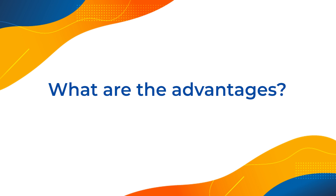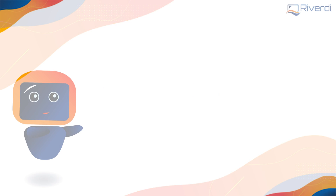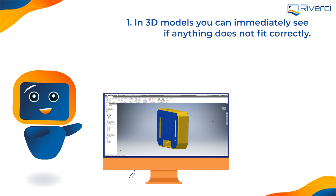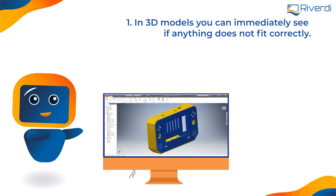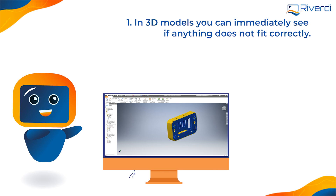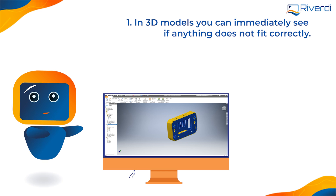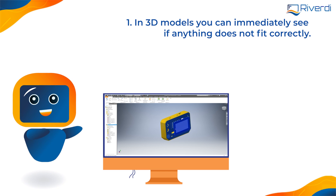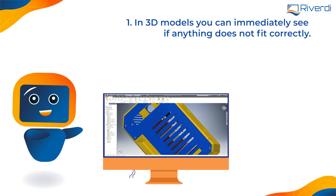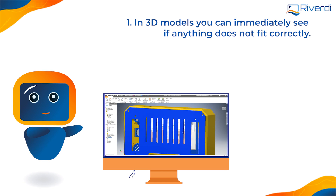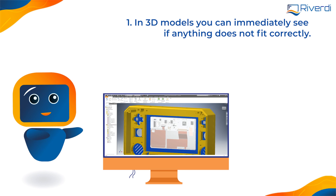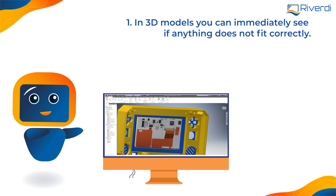What are the advantages? First, in 3D models you can immediately see if something does not fit. What if something needs to be replaced or moved around? In 3D you can easily arrange your own board. You can measure distances, route the cables, estimate connection lengths. There is no need for guessing. Everything is there, in front of you.